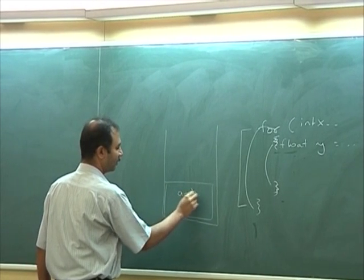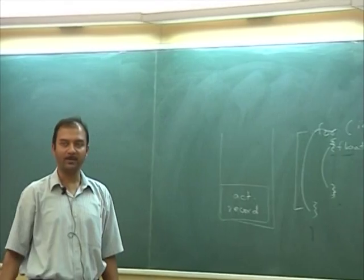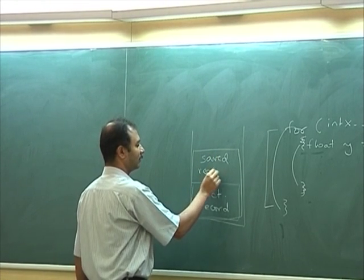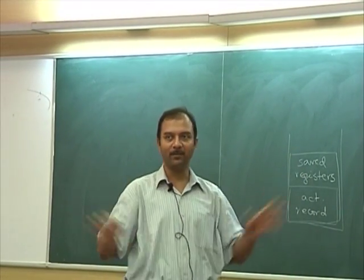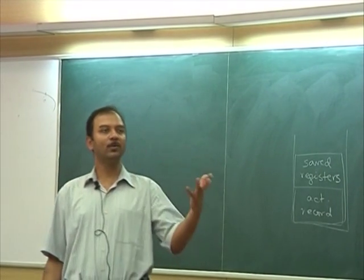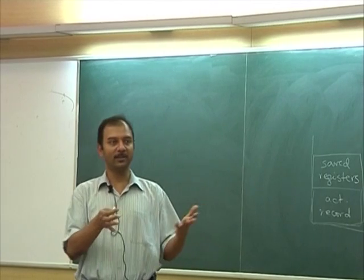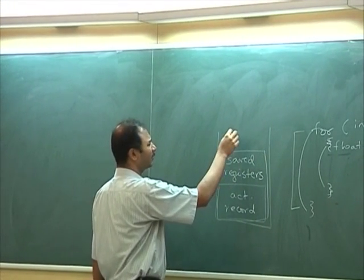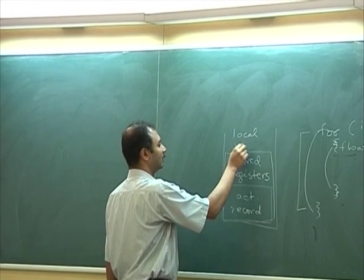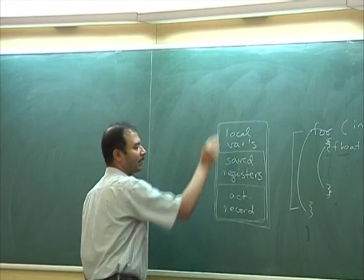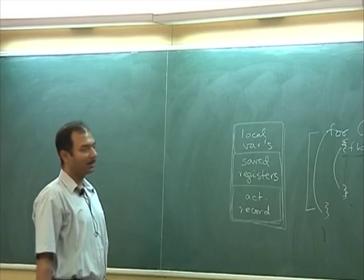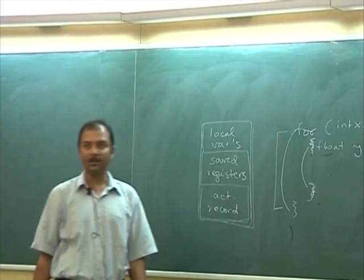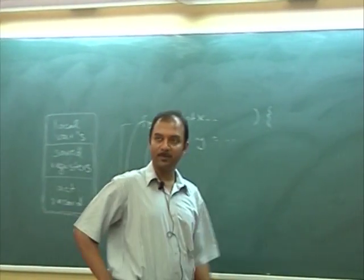So the stack is used for a whole bunch of things: the activation records that communicate data between the caller and callee; saved registers — remember the caller has a particular state of all the registers in the system, and if the callee mangles them, the callee should restore them before transferring control back, otherwise the caller's state has been completely destroyed; and the third thing is these local variables declared in some scope. The scoping can be static, visible through nested scopes, or dynamic — a result of one function calling another.